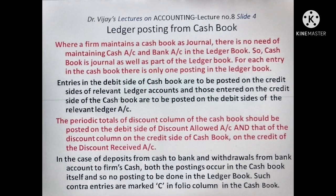Regarding the discount columns of the Cash Book — the periodic total (meaning the total when we close the Cash Book, normally once a week or once a month depending on the number of transactions) — the total of the discount column on the debit side should be posted on the debit side of Discount Allowed Account. The periodic total of the discount column on the credit side of the Cash Book is to be posted on the credit side of Discount Received Account.